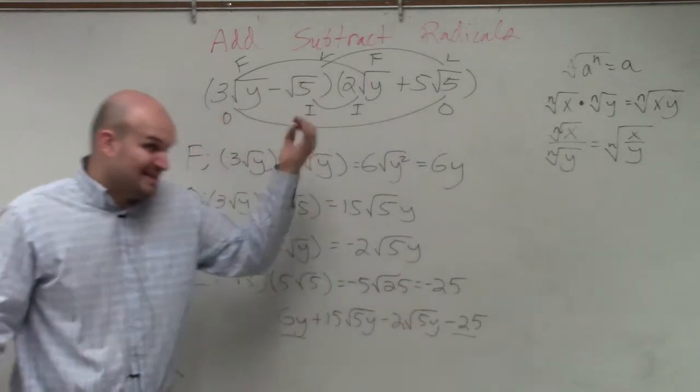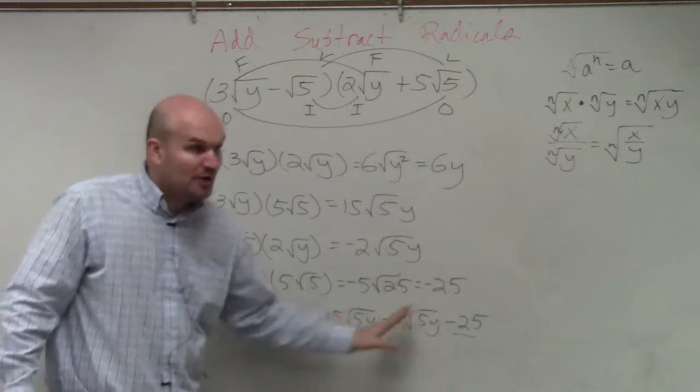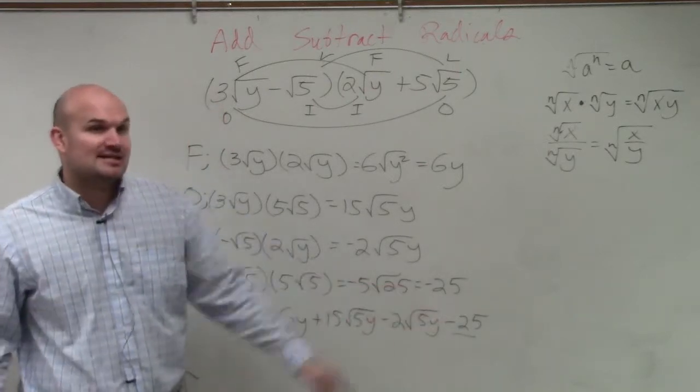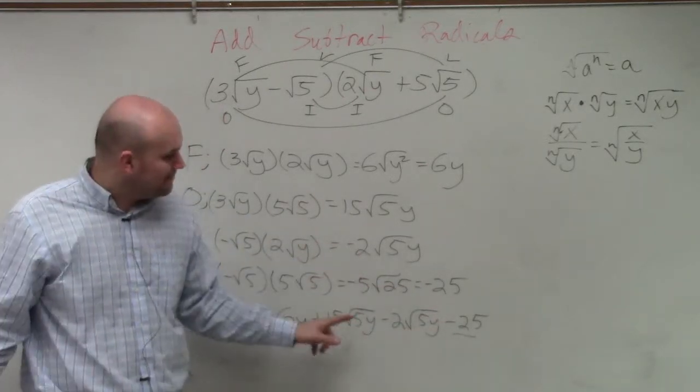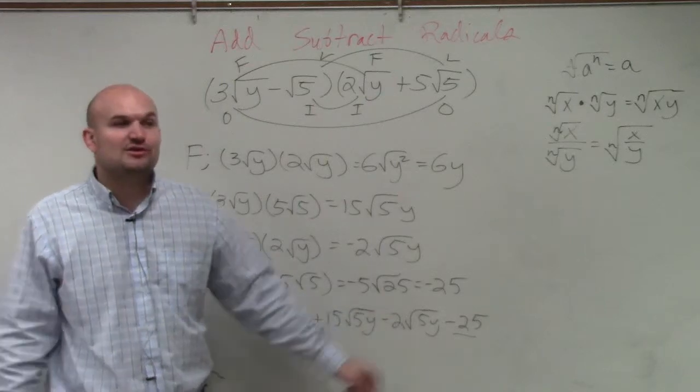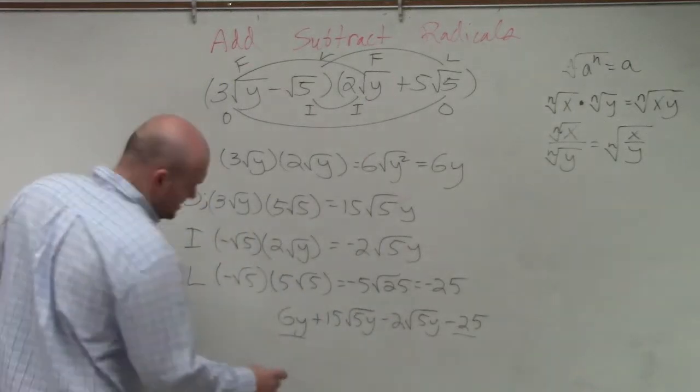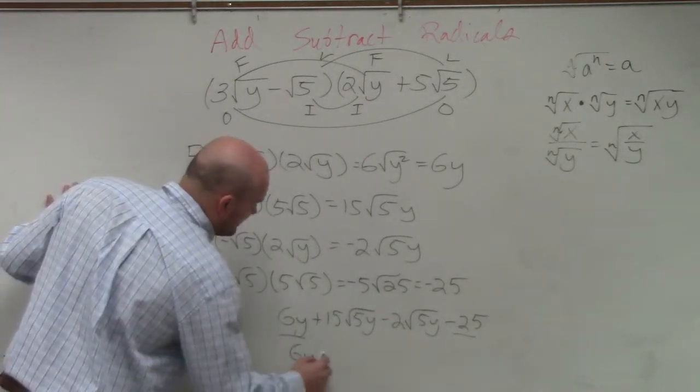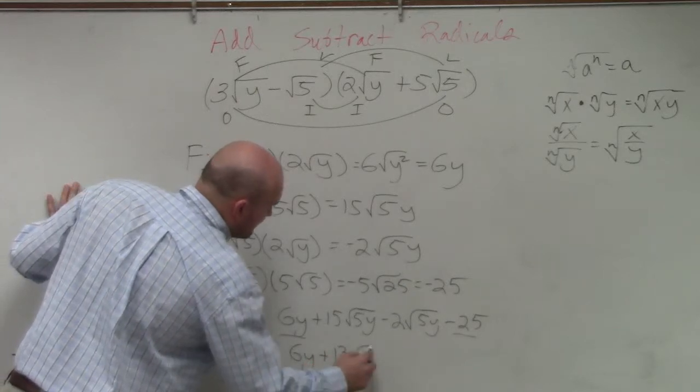Since they're both square roots, meaning the index is the same, and they're both 5y, meaning the radicands are the same, I can simply combine them. So 15 minus 2 is going to be 13 square root of 5y.